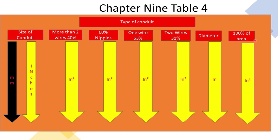We won't often use the diameter column, but if you're ever asked the diameter of a specific conduit, that information is right here in Chapter 9 Table 4. I'll also say that I have seen the 100% area column on an exam before. If asked for the 100% area of a conduit, just come to Chapter 9 Table 4, find your conduit type, slide over to 100%, and look it up.